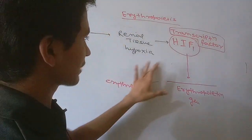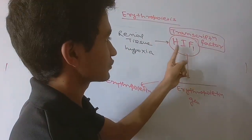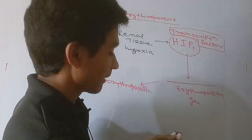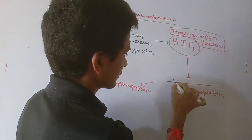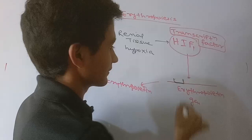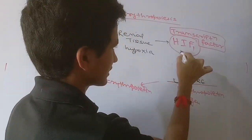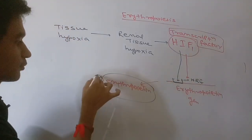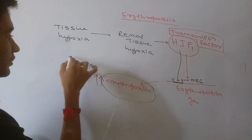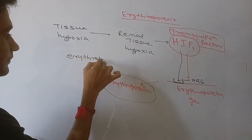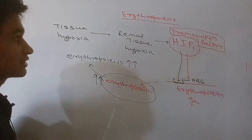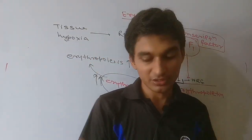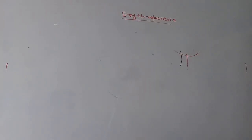To summarize the mechanism: tissue hypoxia → renal tissue hypoxia → HIF-1 formation (a transcription factor) → binds to the hypoxia response element on the erythropoietin gene → increased erythropoietin synthesis → increased rate of erythropoiesis. This is the main mechanism regulating erythropoiesis.